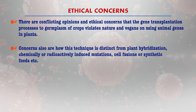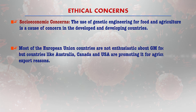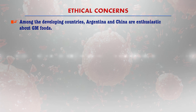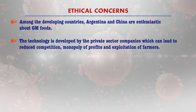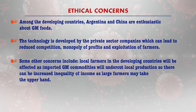Socio-economic concerns include that genetic engineering for food and agriculture is a major concern in both developed and developing countries. Most European Union countries are not enthusiastic about GM foods, while countries like Australia, Canada, and the USA promote them for agricultural export reasons. Among developing countries, Argentina and China are quite enthusiastic. Technology developed by private sector companies can lead to reduced competition, monopoly of profits, and exploitation of farmers. Local farmers in developing countries will be affected as imported GM commodities undercut local production, potentially increasing income inequality as larger farmers gain the upper hand.